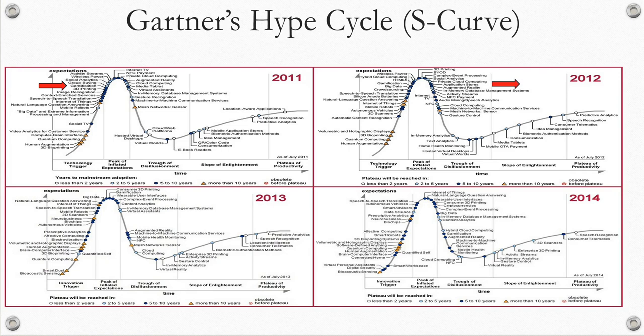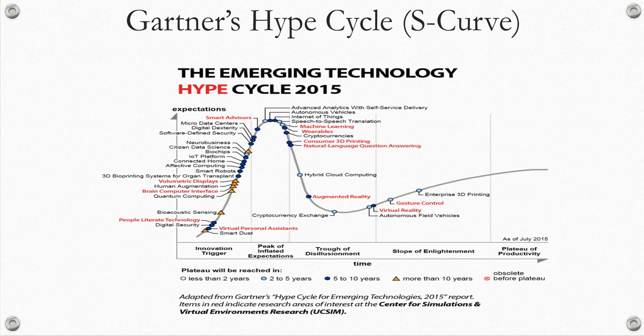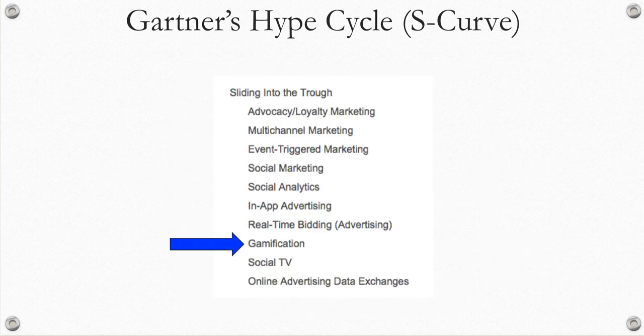Gamification started appearing on Gartner's hype cycle in 2011 at the peak of inflated expectations and moved over the next three years to the trough of disillusionment. But in 2015, gamification disappeared from the hype cycle of emerging technologies. Does this mean the innovation has matured? De Monti suggested that the term gamification might not be in use anymore, but the game elements are as strong as ever in many work and educational environments. Maguire suggested that gamification is moving down the trough of disillusionment, and other researchers seem to share the same position.